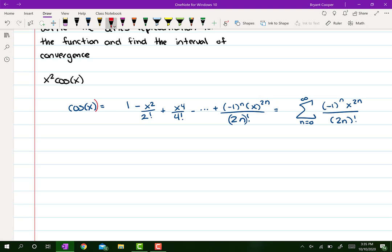Then I multiply everything through by x squared in order to get the x squared into my function. So I get x squared cosine of x equals, you distribute the x squared everywhere in there. Notice that it's going to affect the x term and it becomes 2n plus 2, because you're multiplying by x squared.